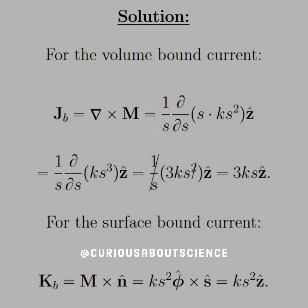For the volume bound current, we take the curl of M. In cylindrical coordinates, that is (1/S)(d/dS)(S · KS²), where KS² is the φ̂ component. Taking the derivative gives 3KS², and one factor of S cancels with the 1/S out front, leaving us with a volume bound current of 3KS ẑ.